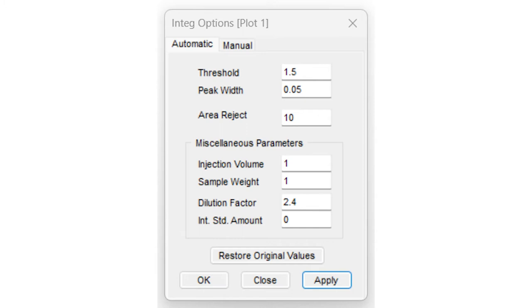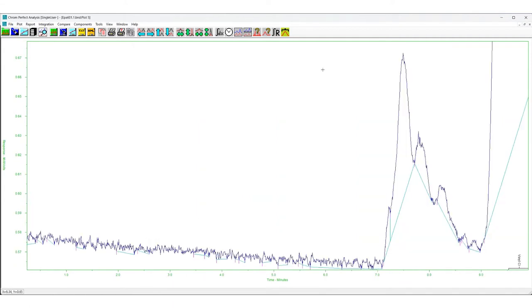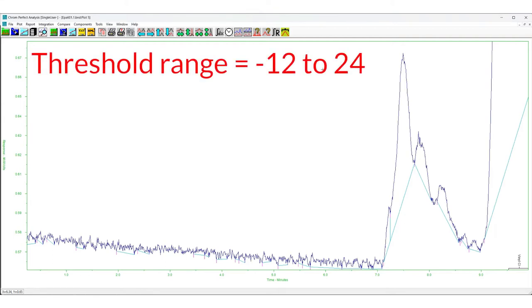The proper value for the threshold is determined by the amount of noise on the chromatogram trace. Because noise varies over a wide range, the threshold is a logarithmic quantity, specified as a dimensionless number in the range minus 12 to plus 24. Fractional values are legal, but rarely necessary. A threshold of zero corresponds to a minimum peak area of about 50 microvolt seconds, and the minimum value doubles every time the threshold is incremented by one.